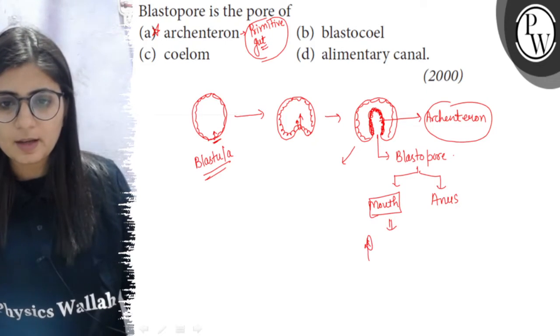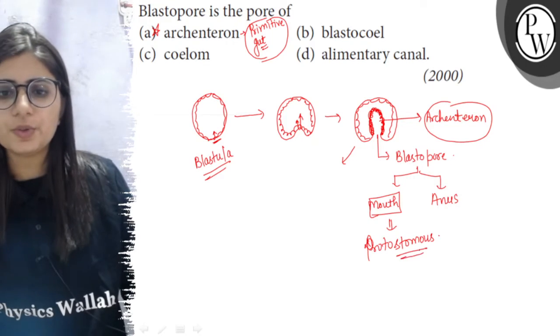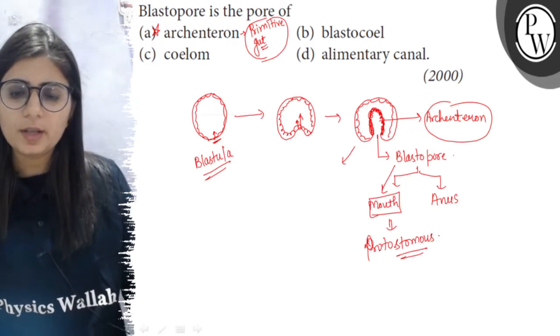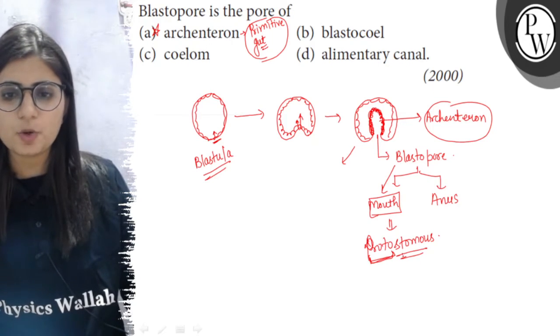such animals are called the protostomous animals. Animals where the mouth is developed from the blastopore are called protostomous. Proto means first and stoma means mouth, so mouth is formed first.